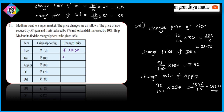Next, 92 rupees — so this is 92 rupees. Next, 257 rupees — 257 rupees 60 paise. Next, 132 rupees — increase in the market is 132 rupees. Increase in the market is 88 rupees. That's easy to solve this problem.